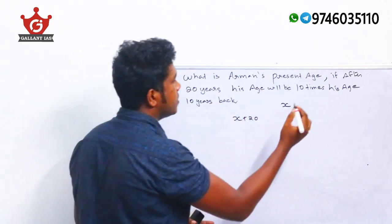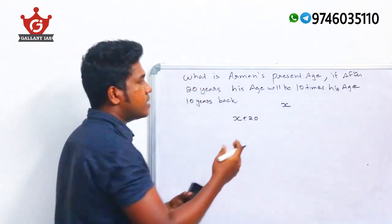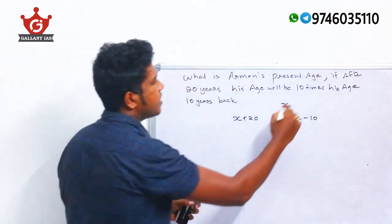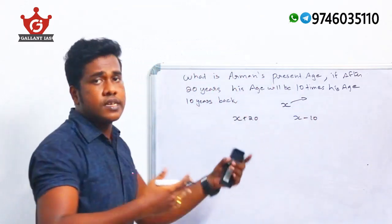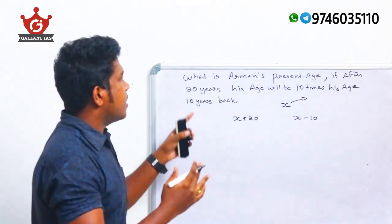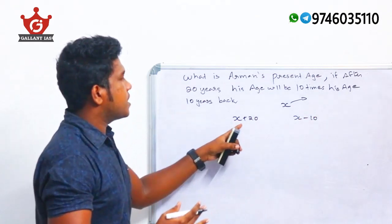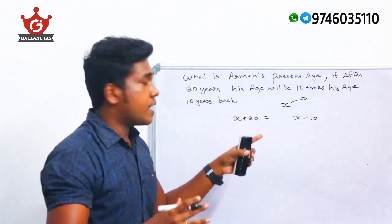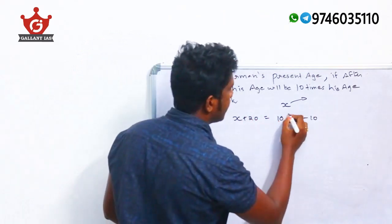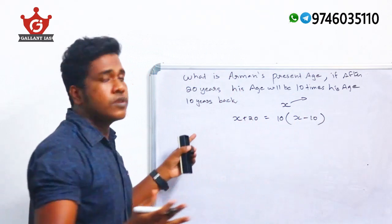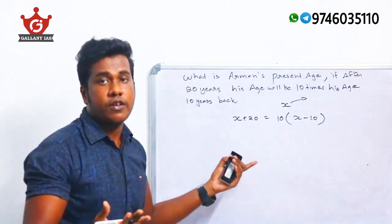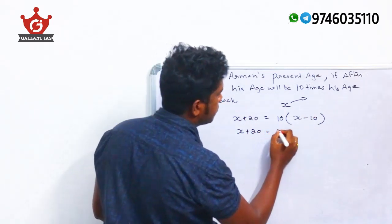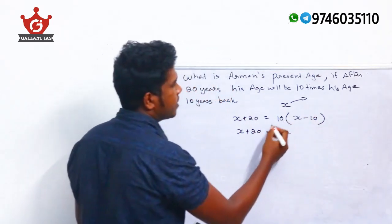His present age is X, so 10 years back his age was X − 10. It is said that X + 20 equals 10 times his age 10 years back, so X + 20 = 10(X − 10). Now we need to find the value of X.